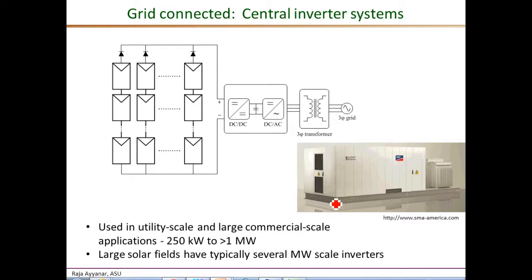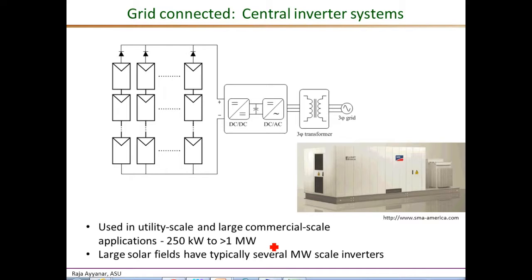Next we come to the more common type of PV inverters: the grid-connected PV inverters. Among these, we look at central inverters first. Central inverters are used in utility scale and large commercial scale applications, with individual inverter power ratings ranging from 250 kilowatts to well above a megawatt. For example, some PV systems on the parking lots of ASU are rated close to a megawatt and are supported by four inverters rated at 250 kilowatts each.